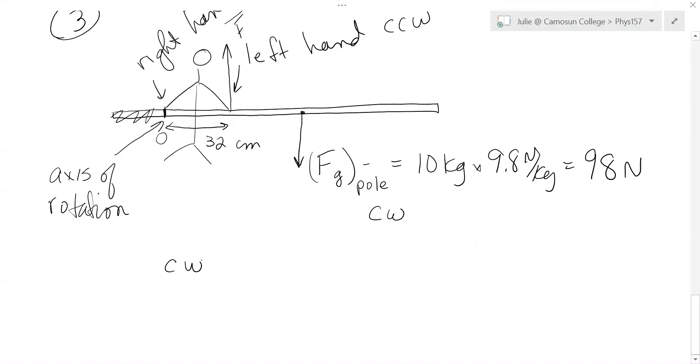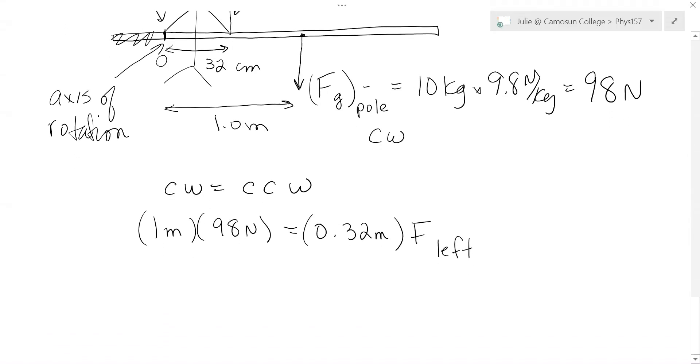So right off the bat, we can calculate that clockwise equals counterclockwise. So from the axis out to the left hand is, well, we'll go to the pole. It's a uniform pole, and it's two meters long. So this must be one meter from the axis of rotation out to the gravity vector. So lever arm, one meter times force, 98 newtons, must equal lever arm, 0.32 meters times the force of the left hand. And so this means that the force of the left hand, which is up, is 98 divided by 0.32, which is 306 newtons, or approximately 310 newtons. And that's up.